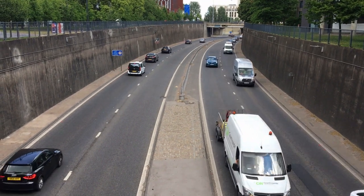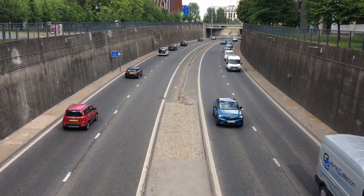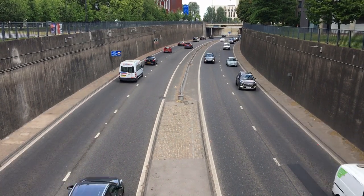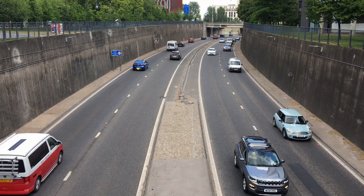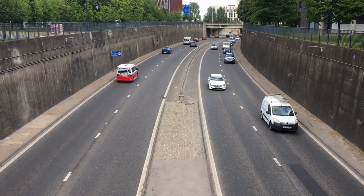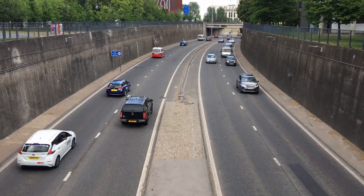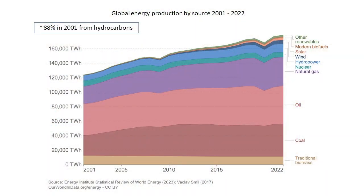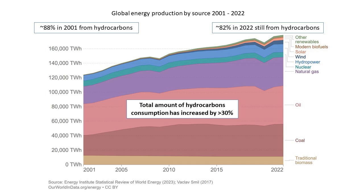The 8 billion people on earth consume almost 180,000 terawatt hours of energy annually. All the things we use and do on a daily basis require energy — industry, transport, heating and so on. As of 2022, fossil fuels still make up over 80 percent of global energy production, and that percentage has not changed very much in the past 20 years.